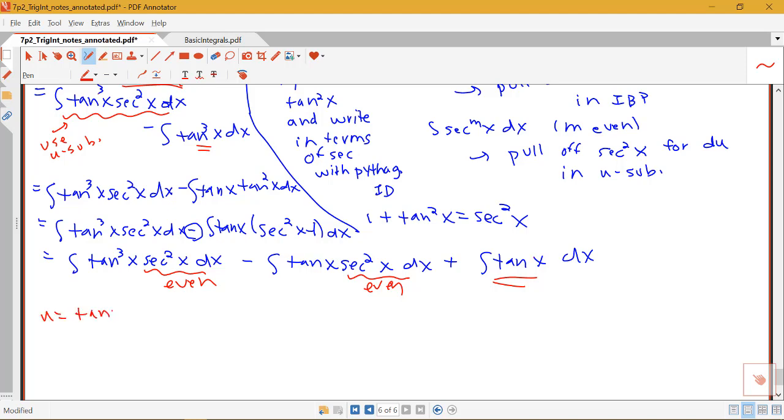So notice we can let u be equal to tan x. Our du is secant squared x dx. And then we'll have this nice integral of u cubed du minus an integral of u du.